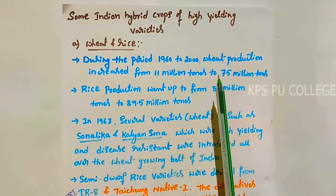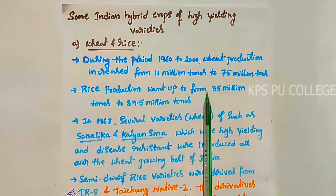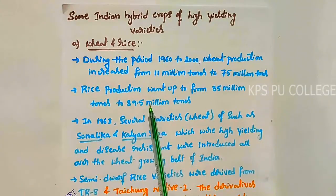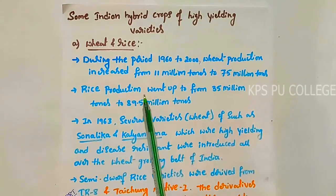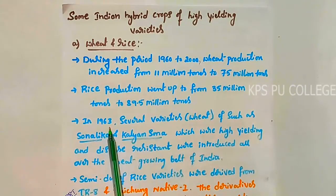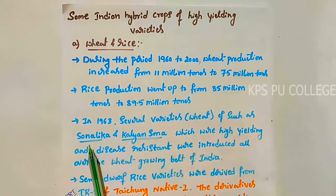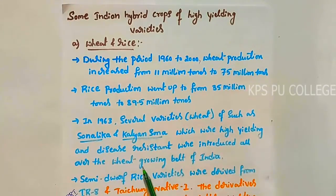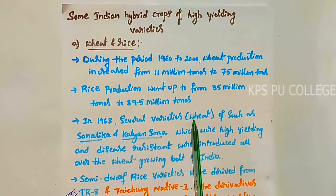Rice production increased from 35 million tons to 89.5 million tons because of plant breeding and increased food production rate. In 1963, several wheat varieties such as Sonalika and Kalyan Sona, which were high-yielding and disease resistant, were introduced all over the wheat growing belt of India.